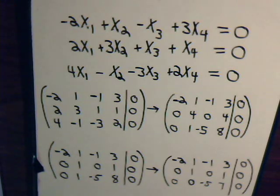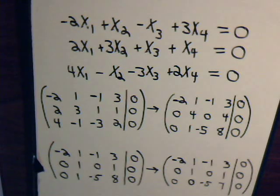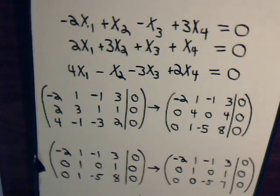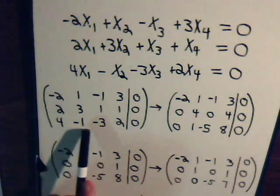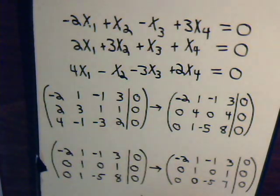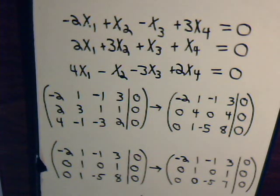In this video we're going to discuss the reduced echelon form of a matrix. We have three equations with four unknowns, so this is an undetermined system set equal to zero. If you have an undetermined system set equal to zero, you're guaranteed a solution — in fact an infinite number of solutions — because there's going to be at least one or more free variables that surface when we go through the Gaussian elimination technique.